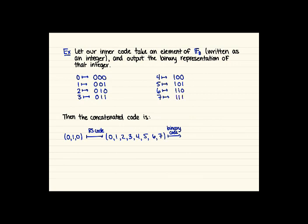So then for the concatenated code, we're starting with (0,1,0), we apply the Reed-Solomon code to get this longer vector, and then every entry of this vector is going to be encoded in binary. I'm going to go over to the next line so I've got a little bit more space.